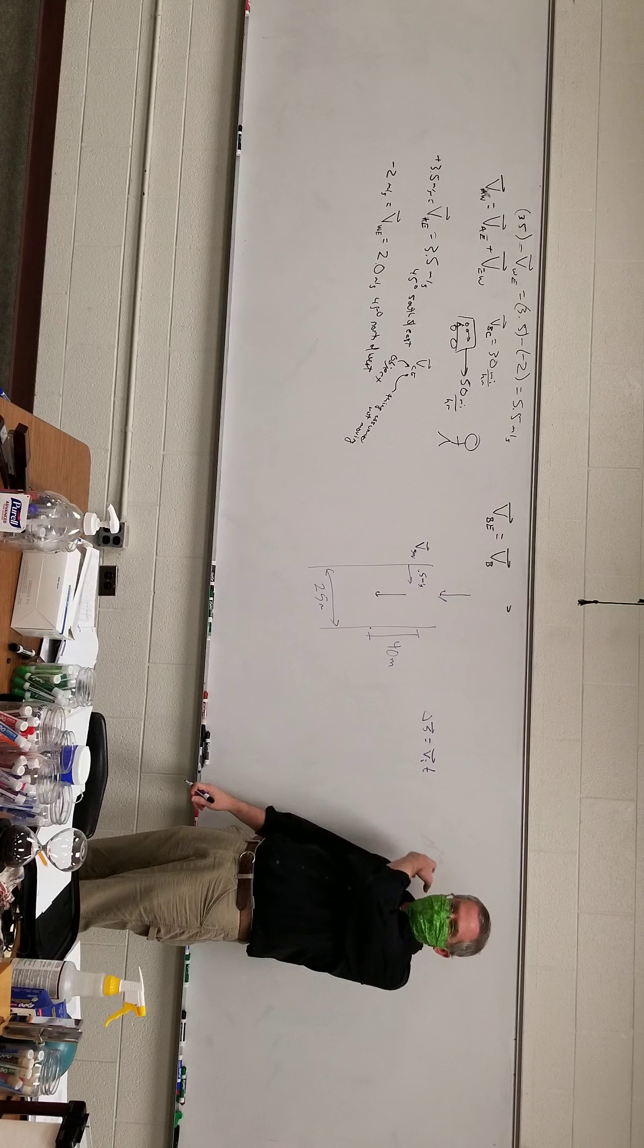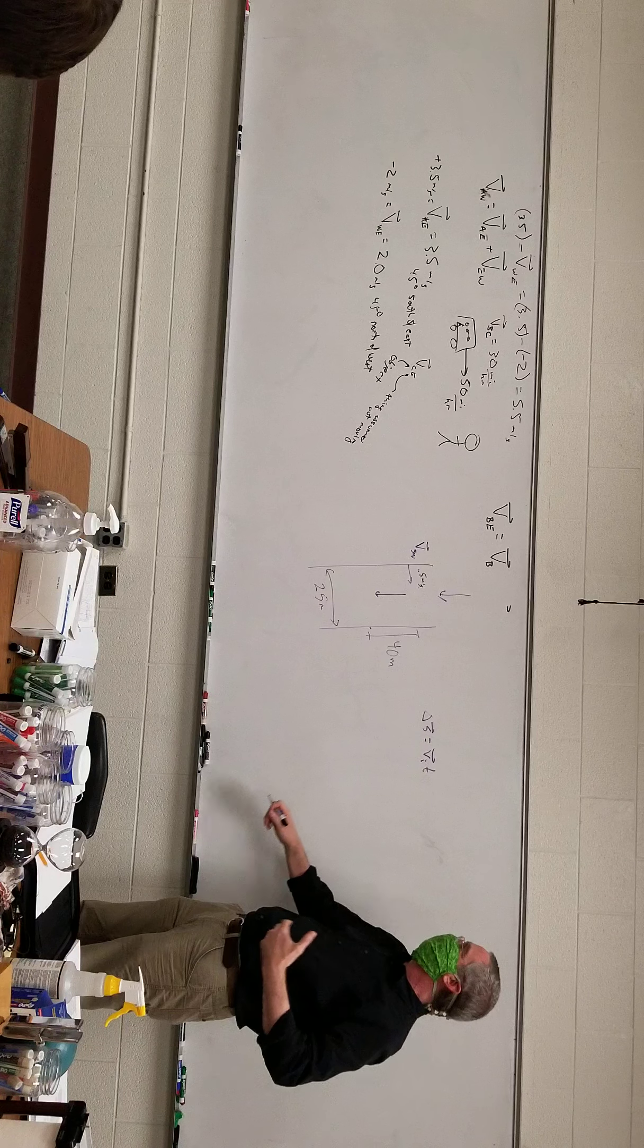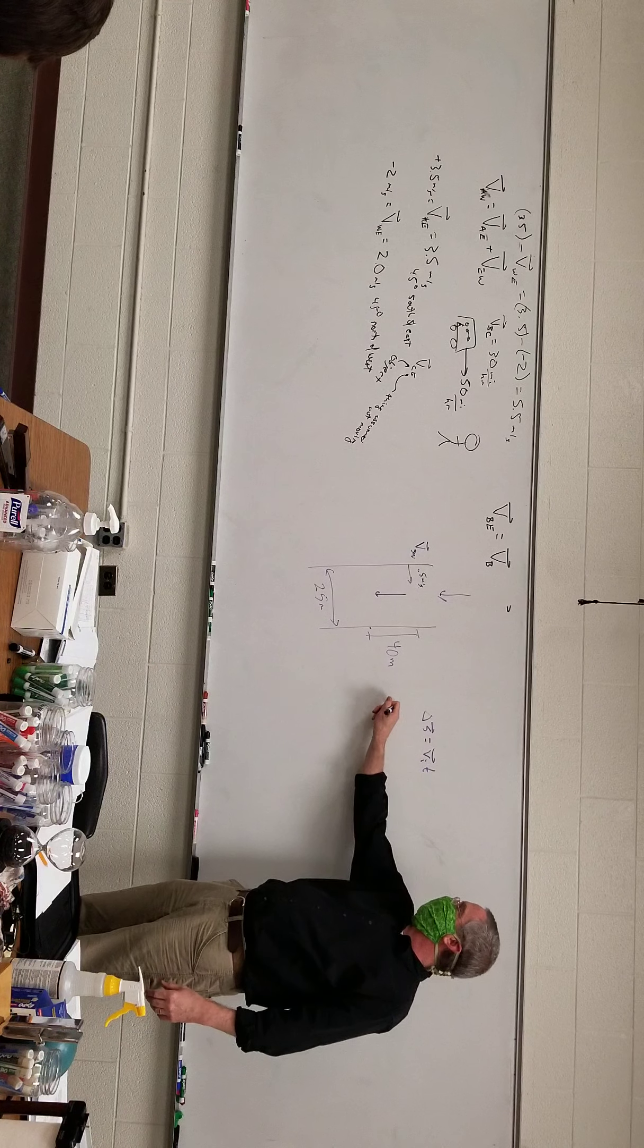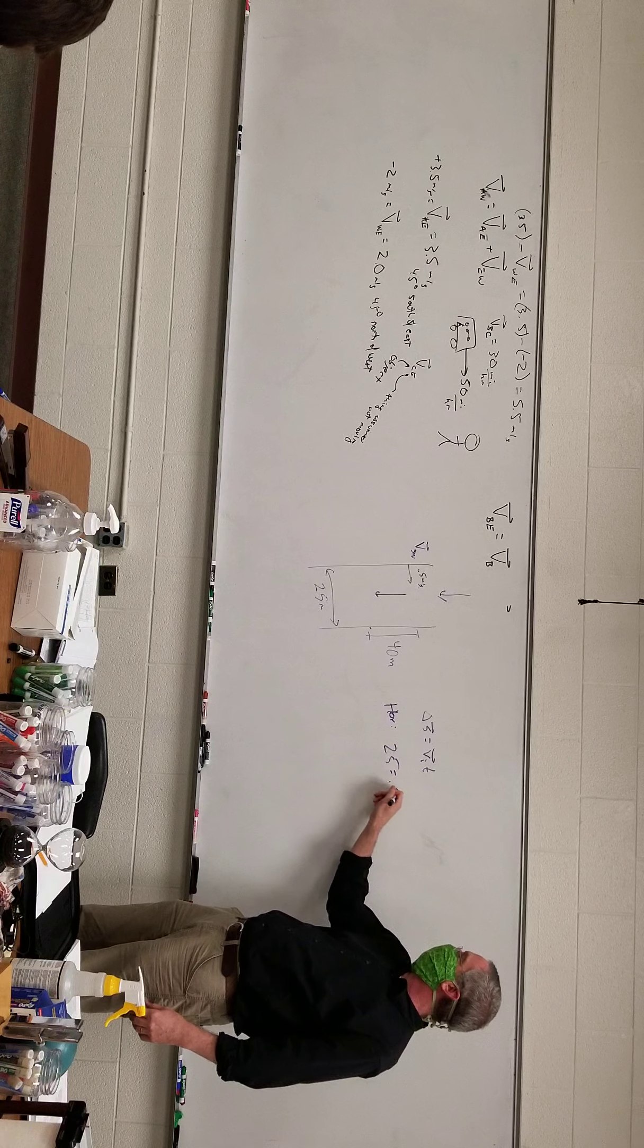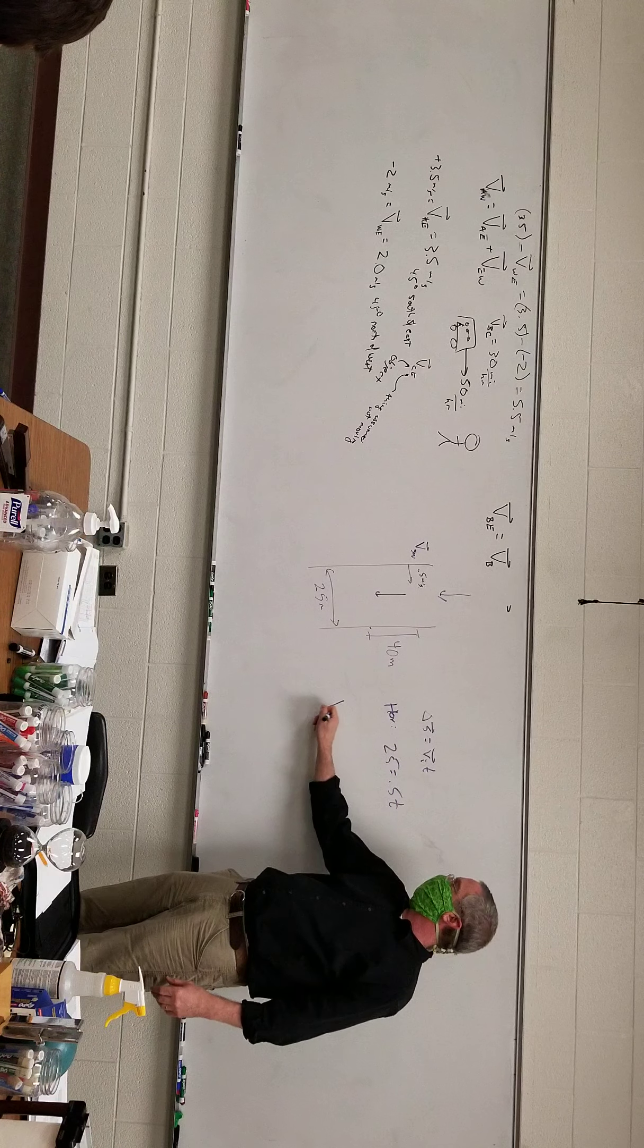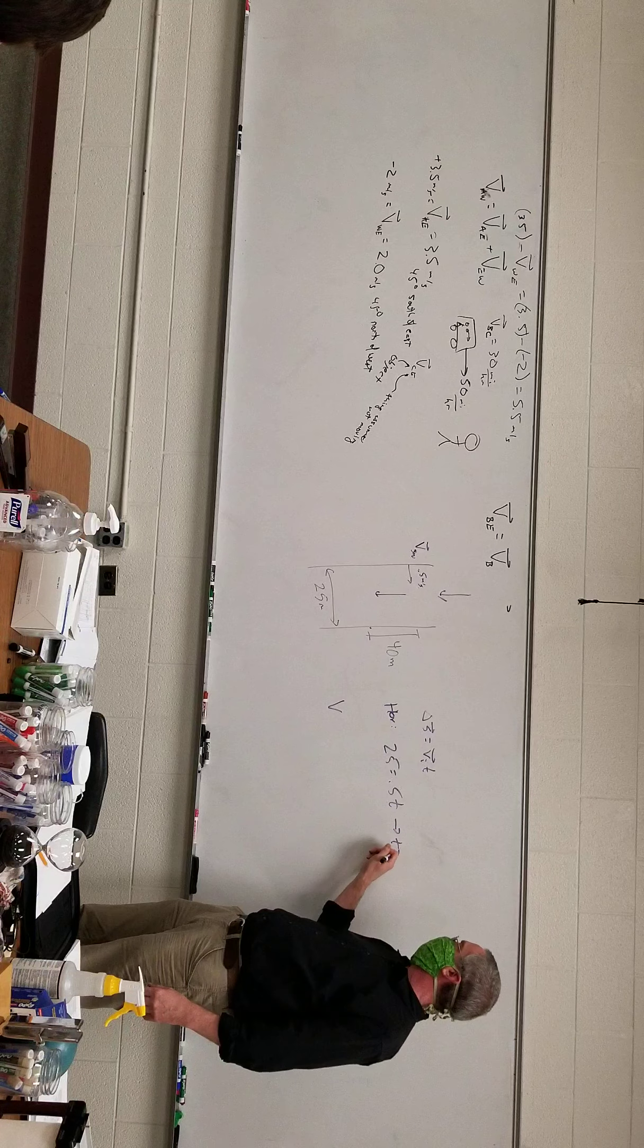The plus one half a t squared all drops out, so horizontally we get 25 equals 0.5 t. And then vertically, therefore t is equal to 50 seconds.